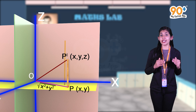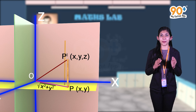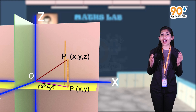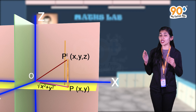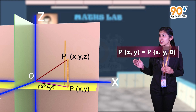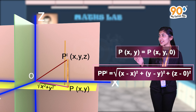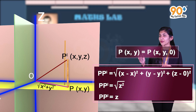Similarly, the length of the rod is the distance between the points P and P-dash. Let's find the length of PP-dash. The coordinates of P-dash are (x, y, z) and the coordinates of P are (x, y). Since P lies on the xy-plane, the z-coordinate is 0, so P is (x, y, 0). Therefore, the length of PP-dash equals the square root of (x minus x) squared plus (y minus y) squared plus (z minus 0) squared, which equals the square root of z squared, which equals z. That is, the length of the rod fixed perpendicular to the xy-plane is z.